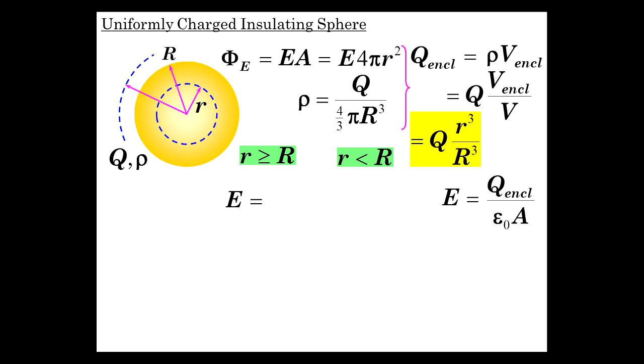For R bigger than R, that's easy. E is Q enclosed over epsilon 0 A, that's KQ over r squared. It's all the charge enclosed, the entire Q.